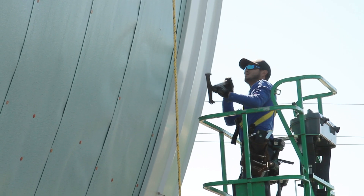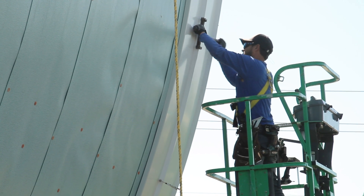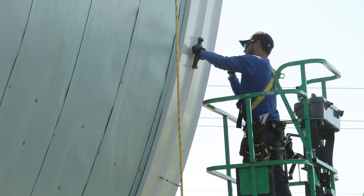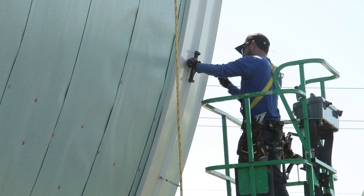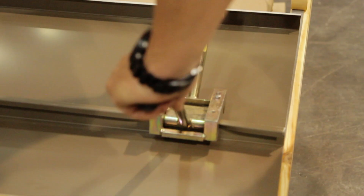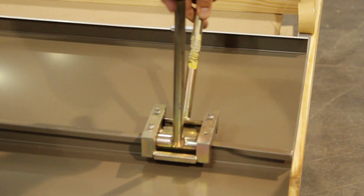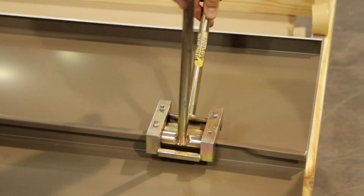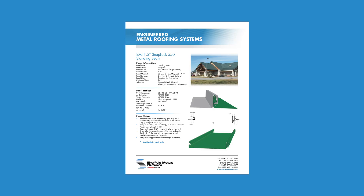Because of that extra labor, mechanically seamed panel profiles can be used in low slope conditions but also in steep slope conditions as well. The downside is the cost is more expensive for a mechanically seamed profile. So if you don't need a mechanically seamed profile, a snap lock system on a steep slope will do just fine and you won't have the extra expense of that added labor.